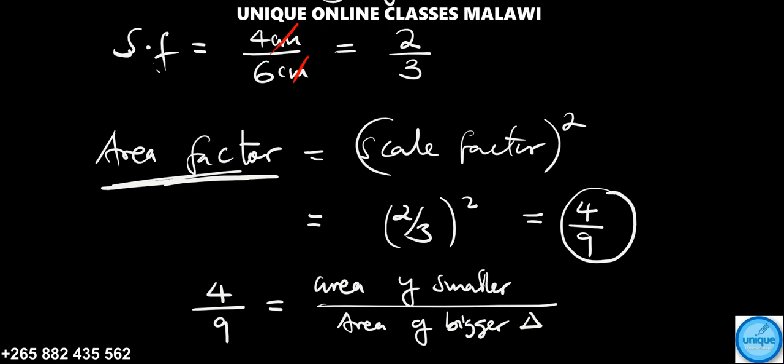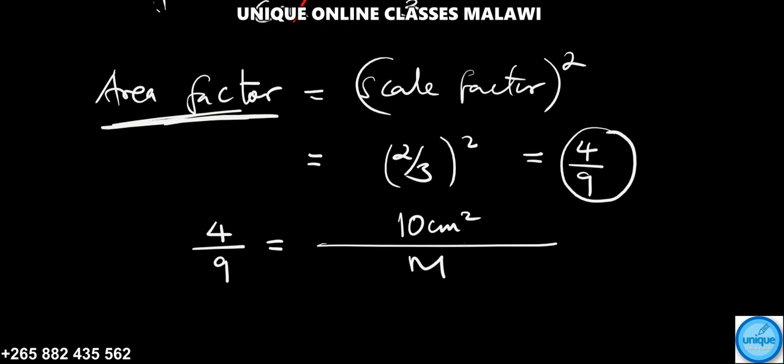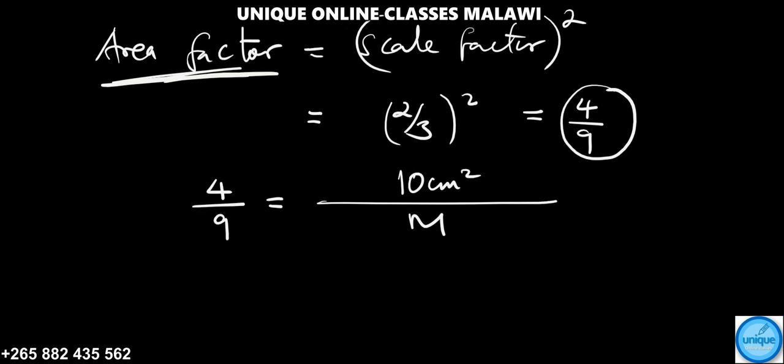So in this case, area of a smaller triangle is 10 cm squared, and the area of a bigger triangle, let's denote it as M. So we can just cross-multiply these things. So 4 times M gives us 4M, and 9 times 10 cm squared, that would be 90 cm squared.